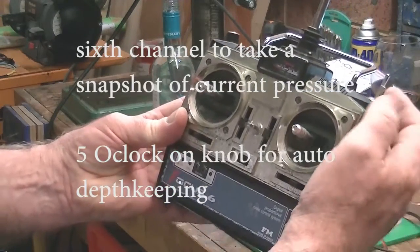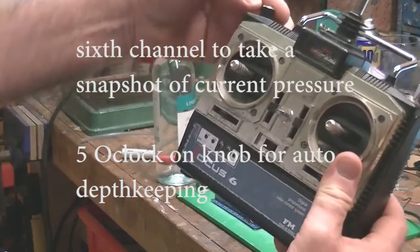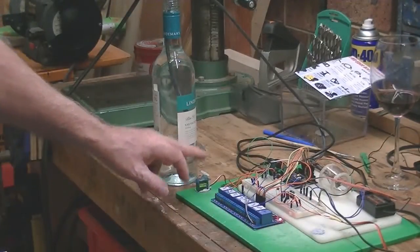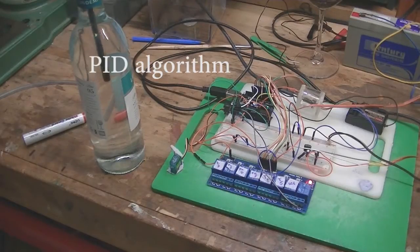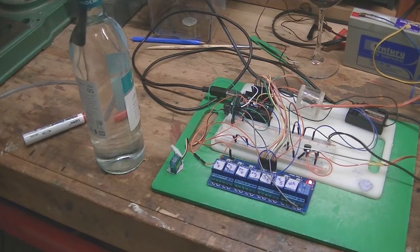And once I've got that done, I'll then use this 6th channel to take a snapshot and then turn it on to automatic running. Now, as you can see, when the pressure goes up or down, the servo reacts. So the servo is keeping the boat at that particular depth.